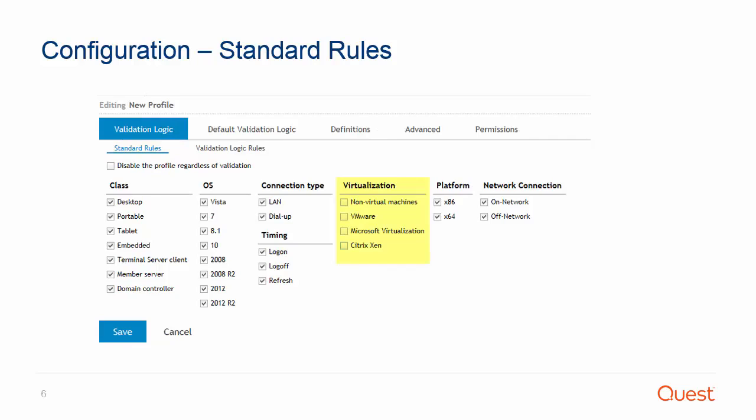Each section under Standard Rules must have at least one box checked. If any section is left completely unchecked, then the element or profile will effectively be disabled. The target of the profile or element will always be defined by one of the options offered in each section.